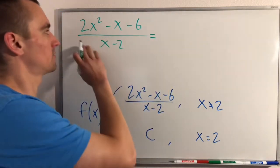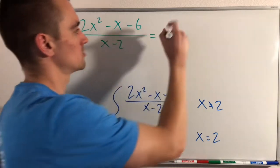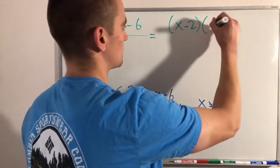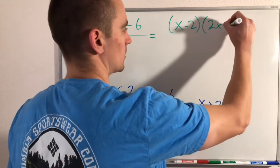We can actually factor out an x minus 2 out of it. So this will be x minus 2 times 2x plus 3.